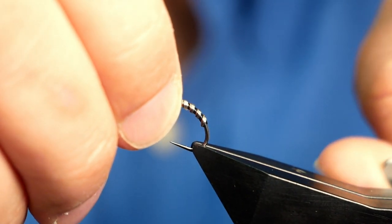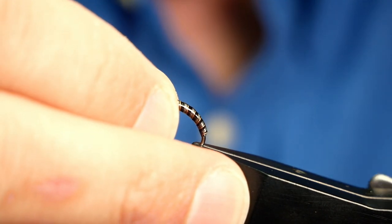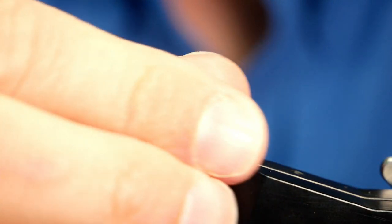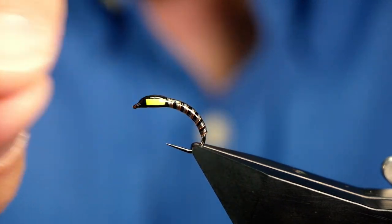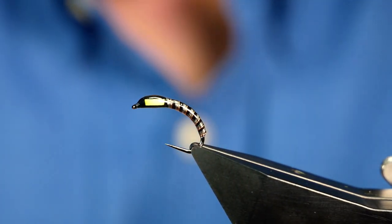And what you end up with is a nice shiny fast sinking buzzer. I would fish this on the dropper though. It's not really designed as a point fly. Depending on the rate of descent that you want, it would do a job for you.